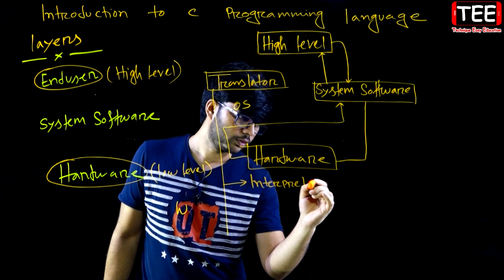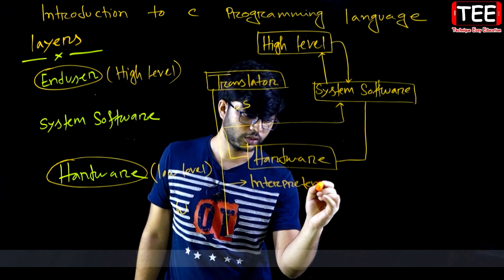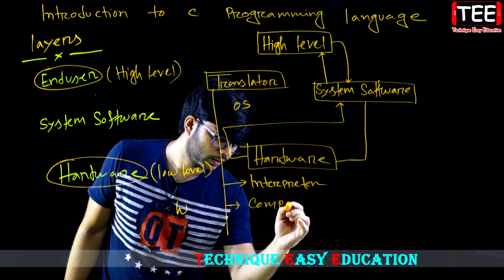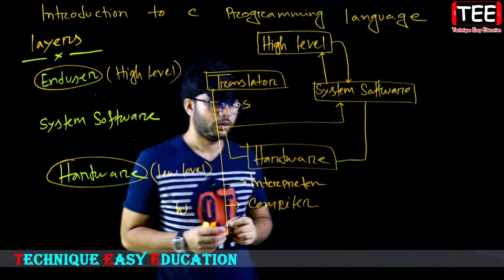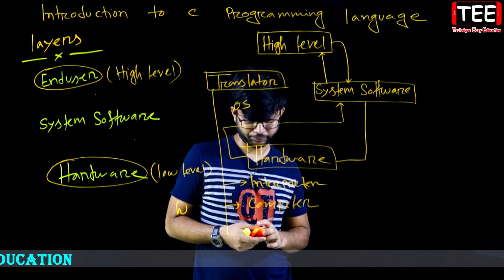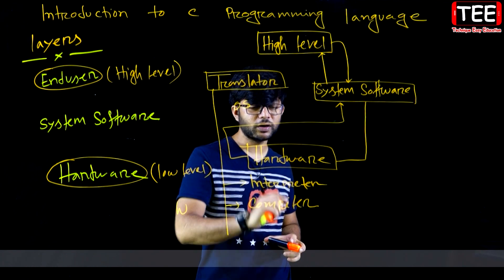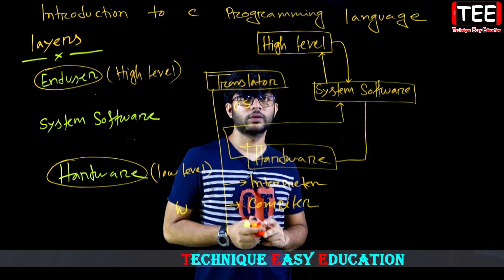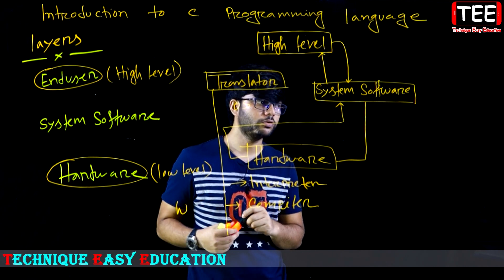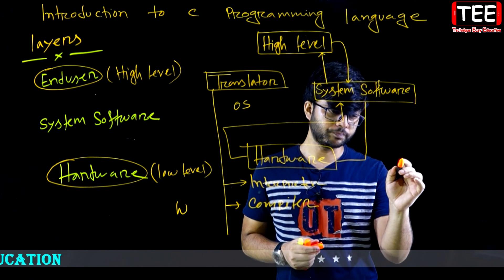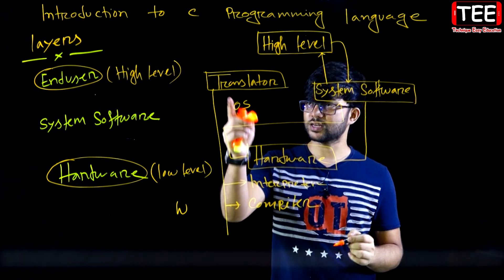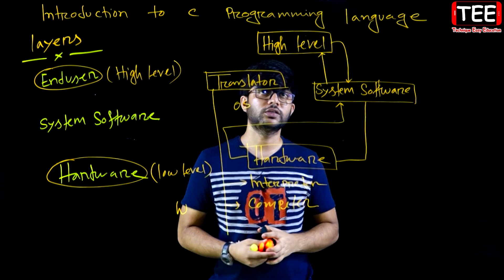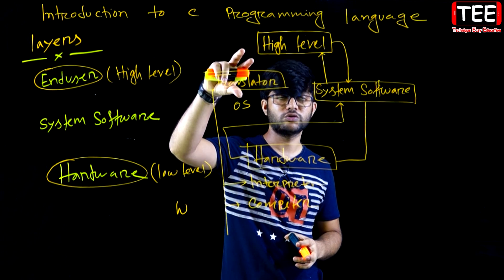The translator. There are two types: interpreter and compiler. Compiler. Interpreter. Compiler and interpreter are both types of translators. The translator converts high-level language to low-level language.